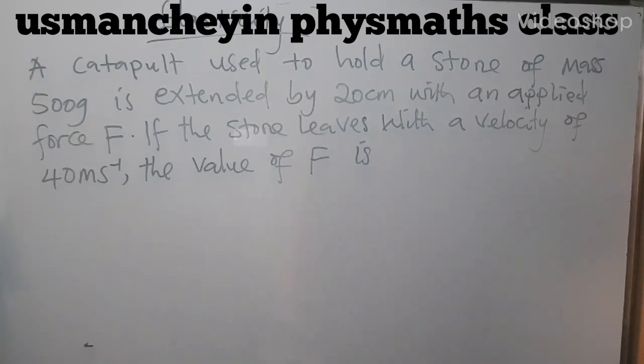In our tutorial today, I shall provide a solution to this problem. A catapult used to hold a stone of mass 500 grams is extended by 20 centimeters with an applied force F. If the stone leaves with a velocity of 40 meters per second, the value of F is?